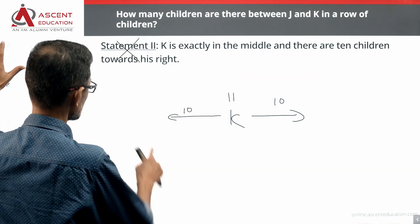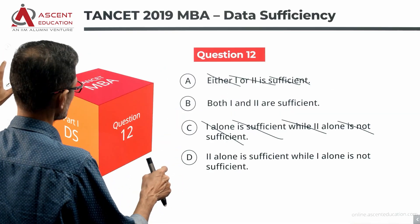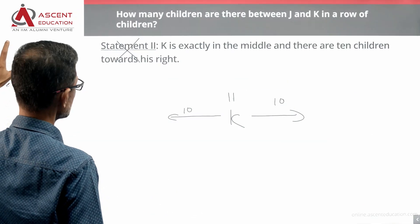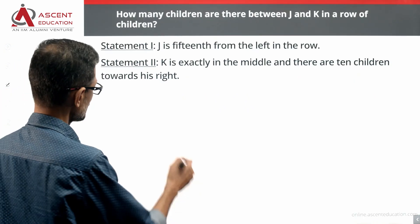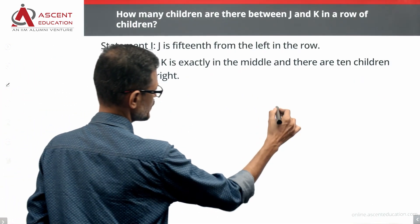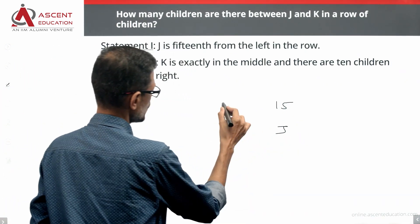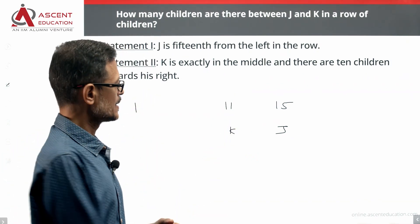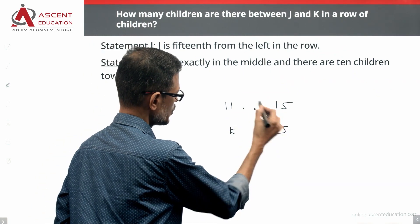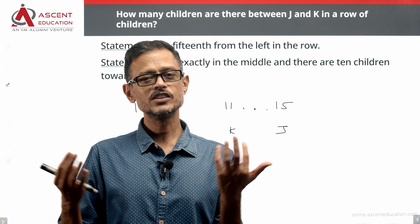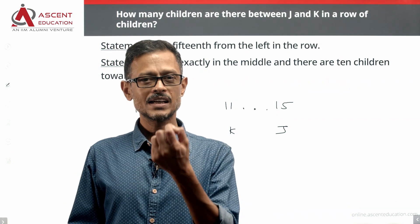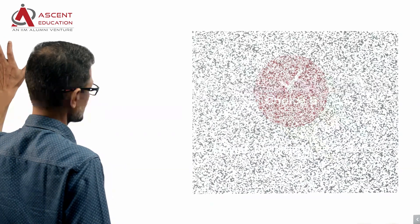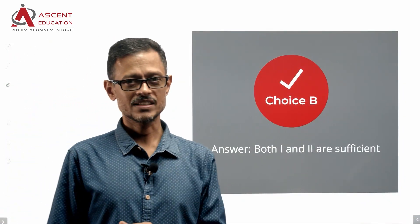Combining both statements: from statement two, K's position is 11th from the left. From statement one, J's position is 15th from the left. Counting the positions in between — 12, 13, 14 — there are 3 children between J and K in the row. We've arrived at a unique answer by combining the two statements together, confirming that answer option B is correct.